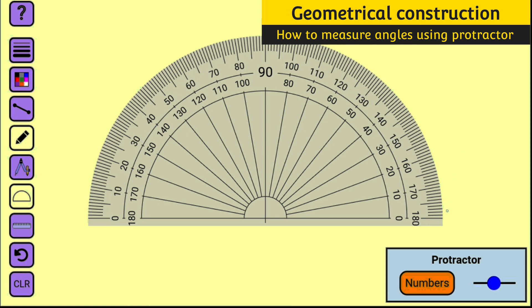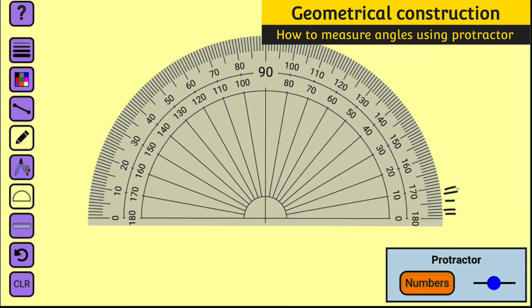If you observe carefully, we have other smaller lines and all these smaller lines represent one degree each. So suppose we want to measure 31 degrees.